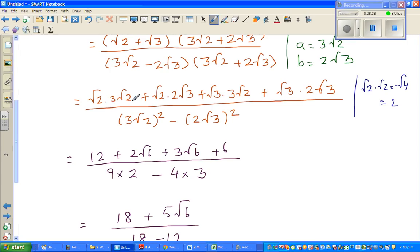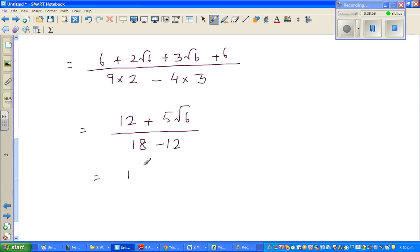Again, I'm making a mistake. This is root 2 times root 2 is 2. 2 times 3 is 6. It's always good to check. So this is 6 plus 6 is 12. So this looks better. So this is 12 plus 5 root 6 over 18 minus, 18 minus 12 is 6.